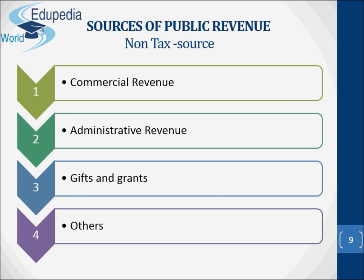Concerning gifts and grants: in general, gifts and grants are payments made by one government to another for some specific functions — for example, central grants to state governments. Gifts are voluntary contributions made by the people to the government for some special purposes. The other sources of revenue are forfeitures, escheats, issuing of currency, and borrowings.